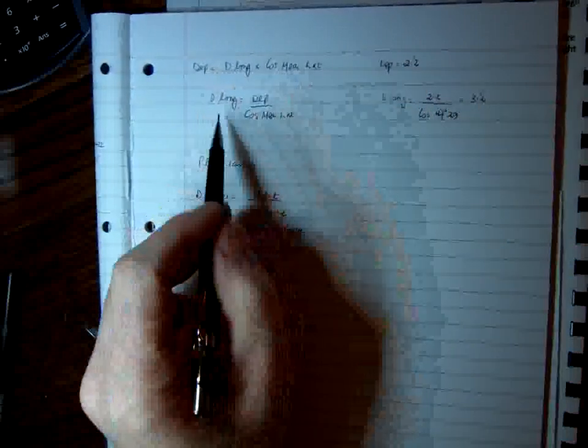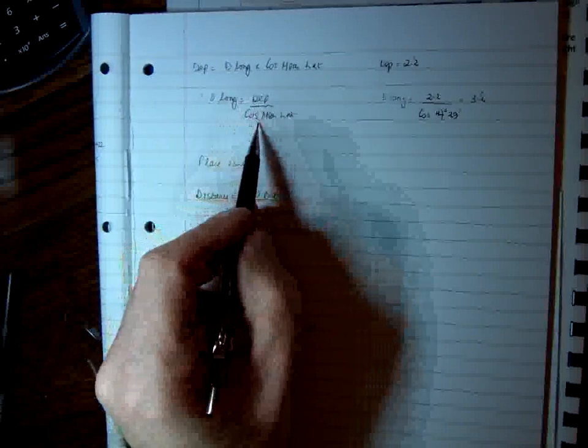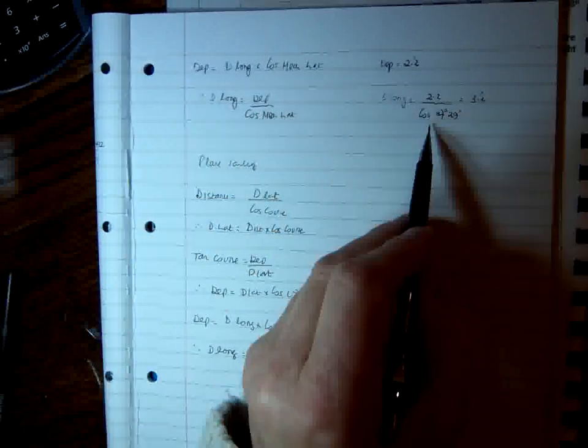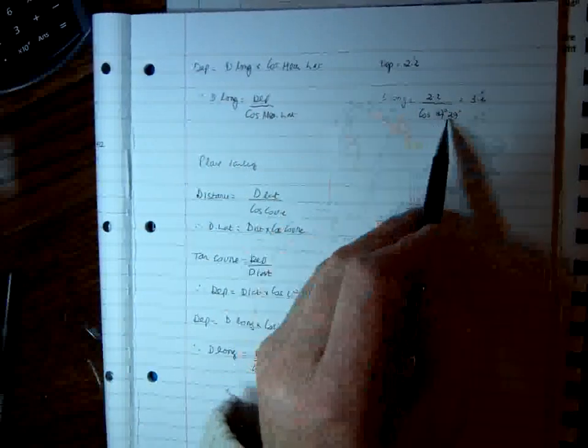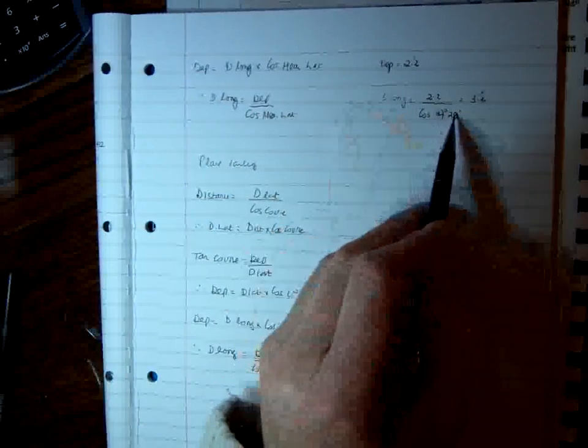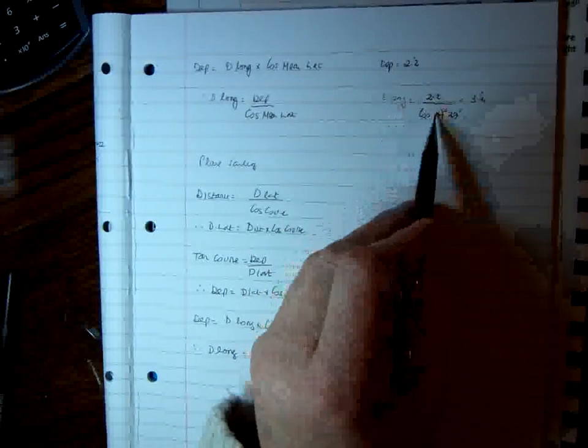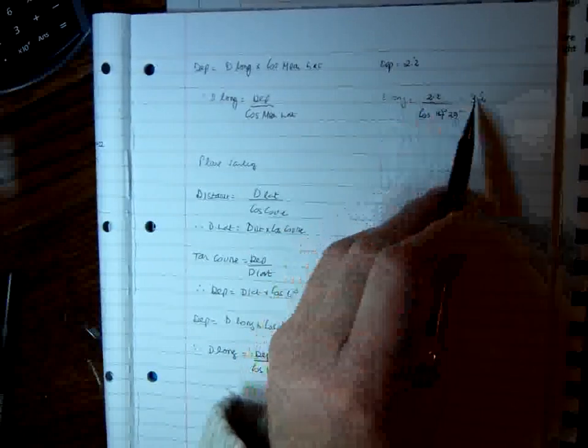By the plain sailing formula, the formula departure equals d long times cos mean lat. We transpose that to find our d long, and it's departure divided by cos mean lat. So we know our departure, 2.2. We know our mean lat, cos 47.29. And by using your calculator, you can find your d long, and it's 3.2 miles.